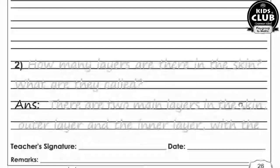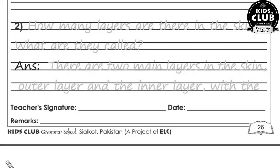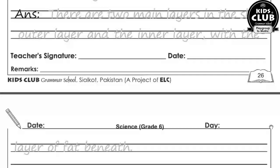Question number two: How many layers are there in the skin? What are they called? There are two main layers in the skin — the outer layer and the inner layer, with a layer of fat beneath.